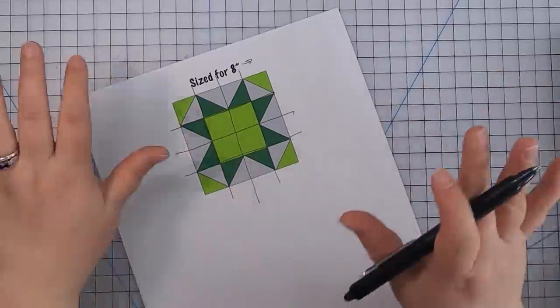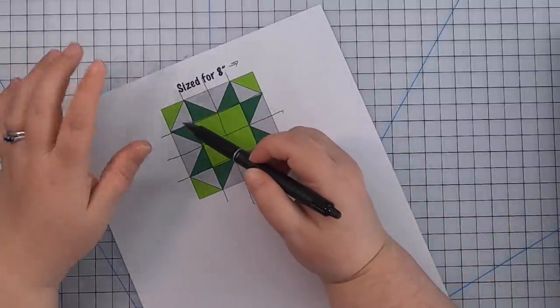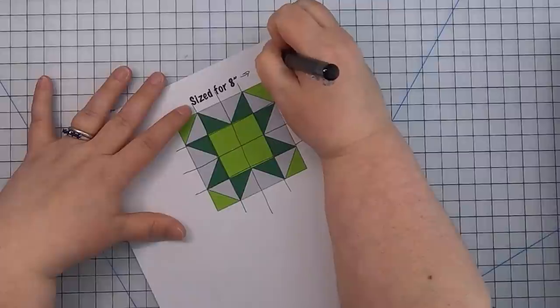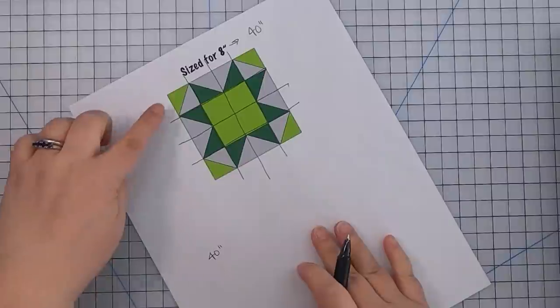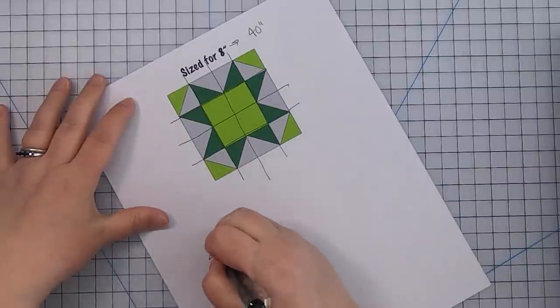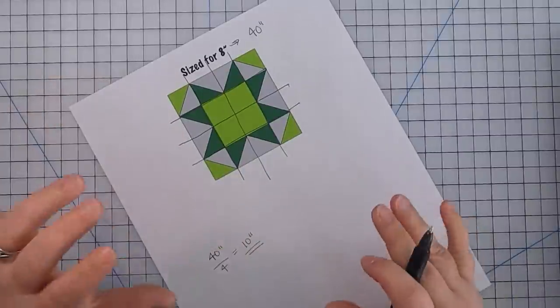So let's do that again on our four by four grid block which has some more complex elements. So originally this tutorial was sized for an eight inch block which had me making two inch finished half square triangles and two by four flying geese. But we want to make a really big block. Let's say we want to make, let's do something fun, let's do a 40 inch block. I want to make a baby quilt that is this one giant block. So the first thing we need to do is take our goal size and divide it by our grid system. So there are four blocks in my grid. So that leaves us with a key size of 10 inches.